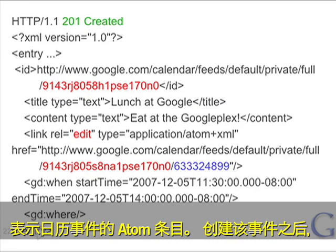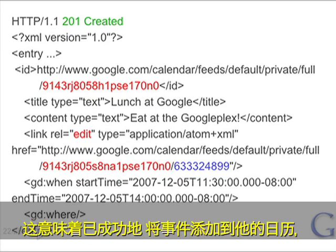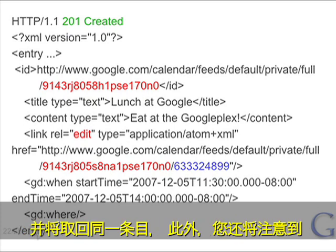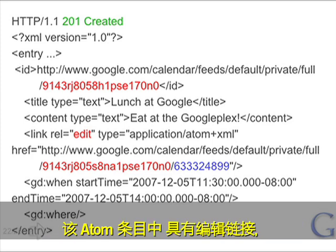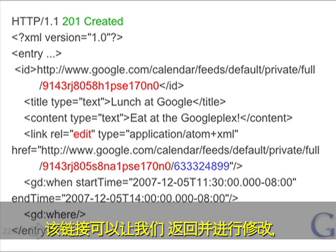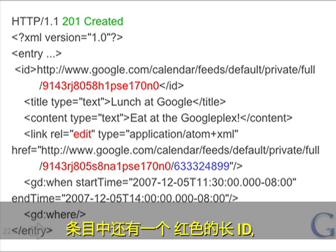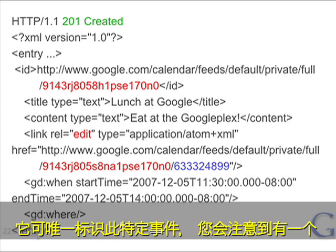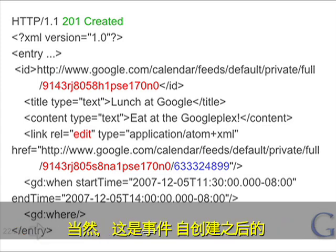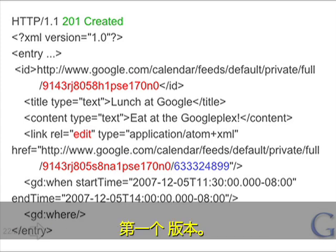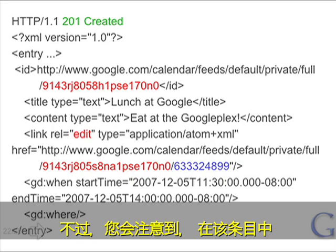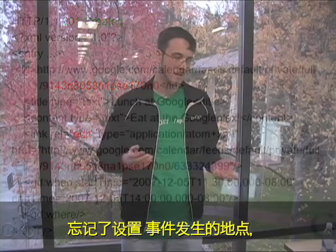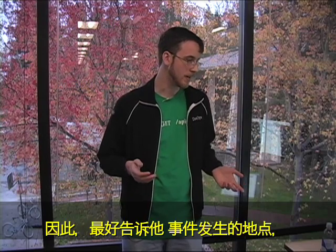Once we've created it, we get a 201 Created response, which means it was added to his calendar successfully. We get back that same entry, and you'll notice there is an edit link inside the Atom entry which allows us to go back and make modifications. There is a long ID in red which distinctly identifies this specific event, and a version string in blue which represents this revision of the event — the first one, since we just created it. But we notice that we forgot to set where the location was occurring, and Mr. TestUser isn't always very bright, so we better tell him where it is.